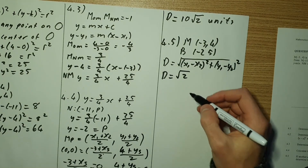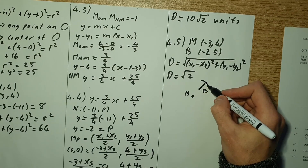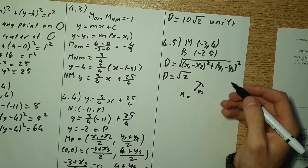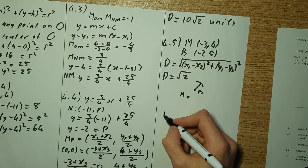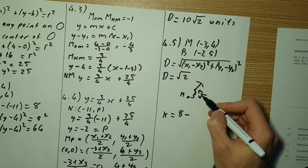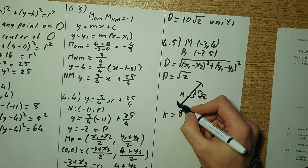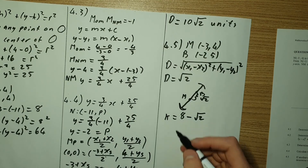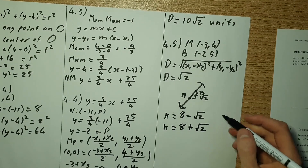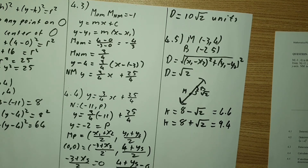We can either have a short radius — k equals the radius of M (which is 8) minus the distance root 2 — or a long radius that cuts through M to the far edge, meaning k equals 8 plus root 2. Plugging into a calculator gives k equals approximately 6.6 or k equals approximately 9.4. That's how we go about solving this question.